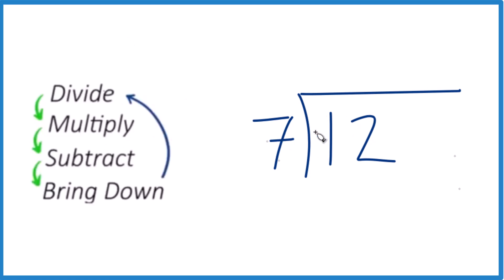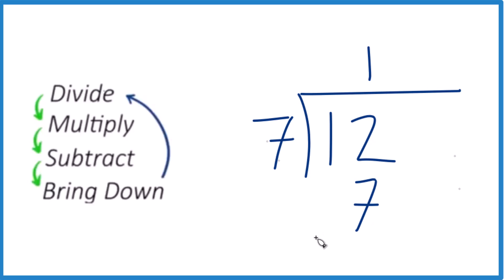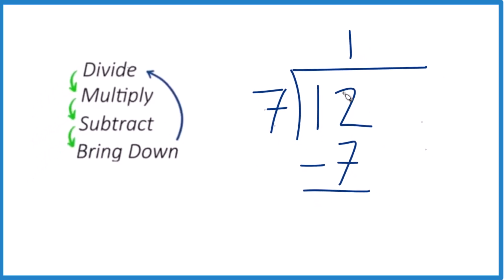7 goes into 1? No. But 7 goes into 12 just one time, because 2 times 7 would be 14, that wouldn't work. So 1. Then we multiply — 1 times 7 is 7. Subtract right here: 12 minus 7 is 5. And then we bring down.